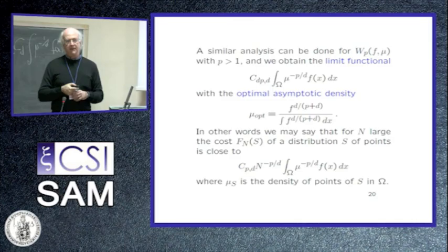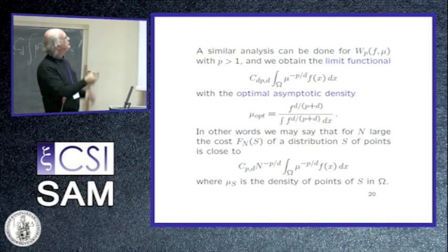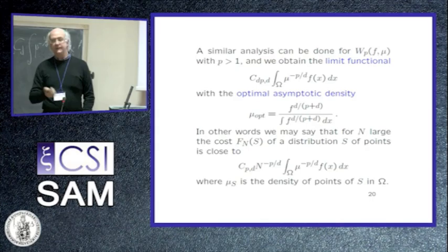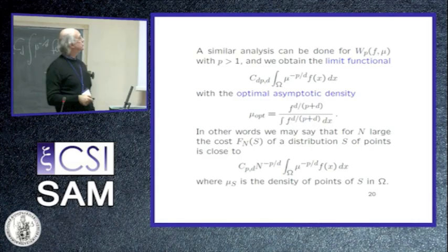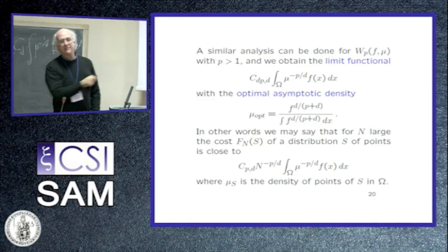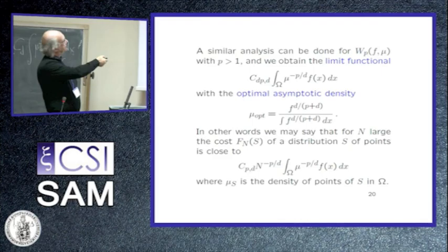I did all the computation using exponent P equal to one, but you can do everything with general P. You get another constant which depends on the dimension and on P. Instead of mu to the minus one over D, you get mu to the minus P over D. And there is this problem: how to evaluate this constant C(P, D).